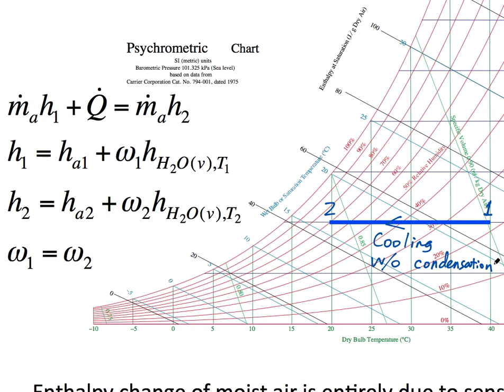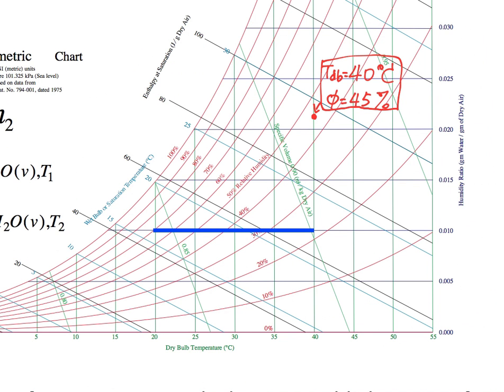And when you accomplish that, when you finish that design, draw that process on the psychrometric chart. I have found this condition: dry bulb temperature 40 degrees, relative humidity 45 percent on the psychrometric chart. And I want to cool this moist air without condensation of water to 25 degrees.